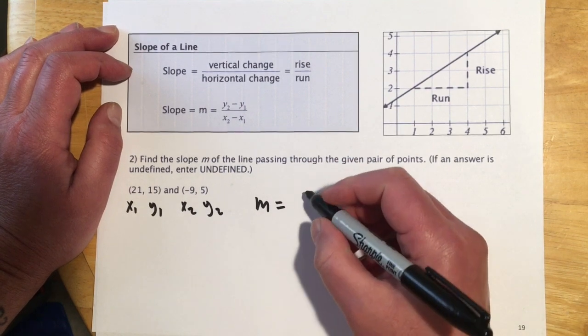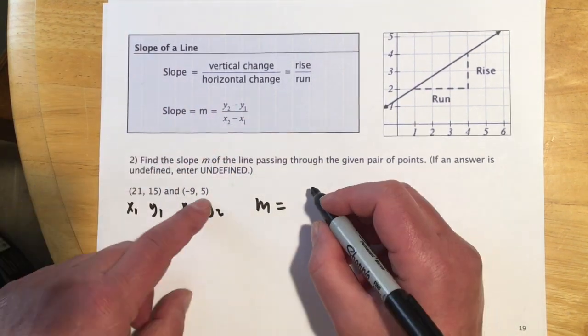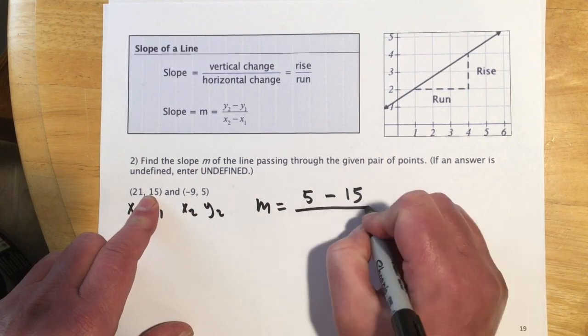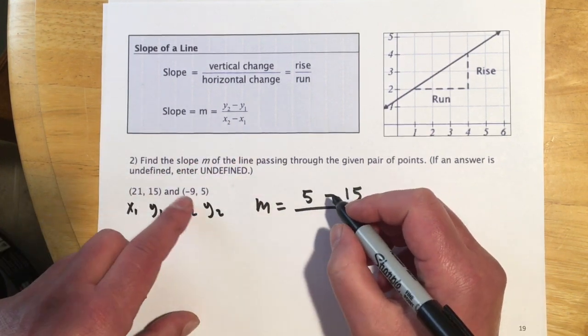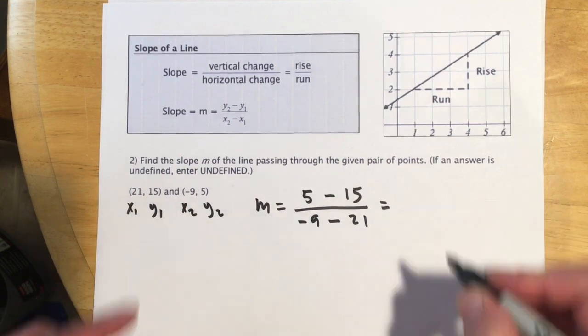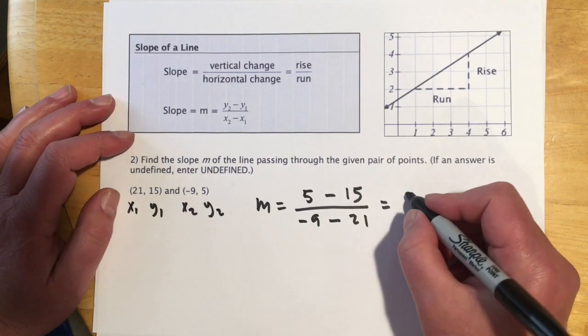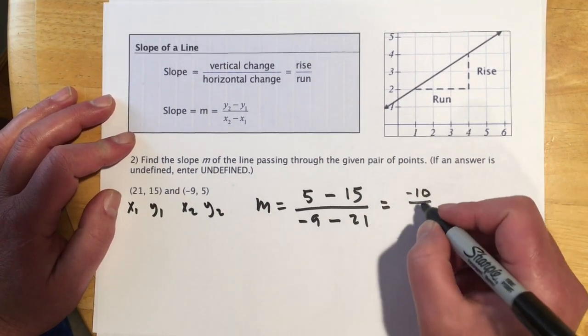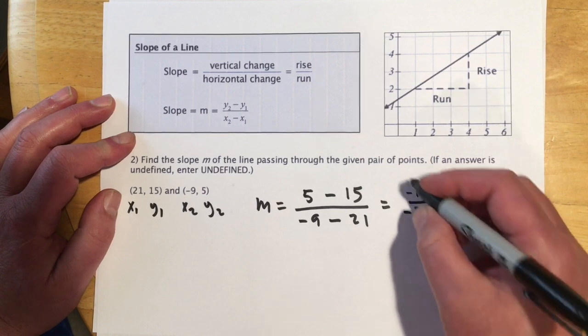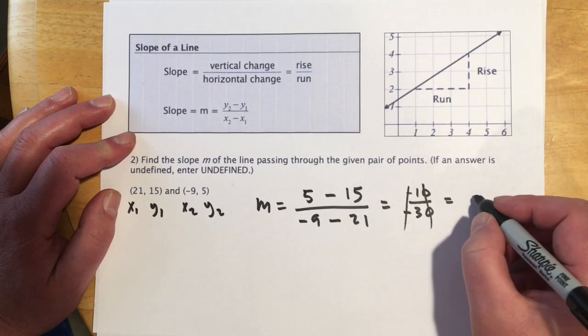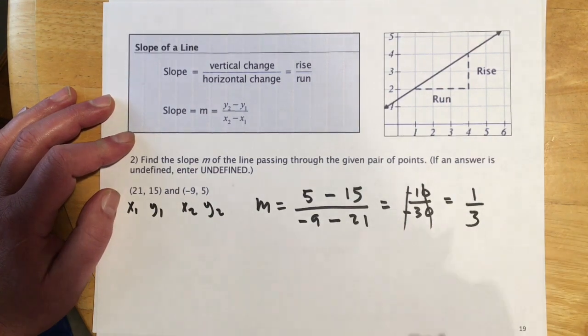So m equals y2 minus y1. So 5 minus 15 over x2 minus x1. So x2 is negative 9 minus 21. So 5 minus 15 would be negative 10. Negative 9 minus another 21 would be negative 30. So double negative, so that makes positive. And I can reduce out a factor of 10. So that should be one-third.